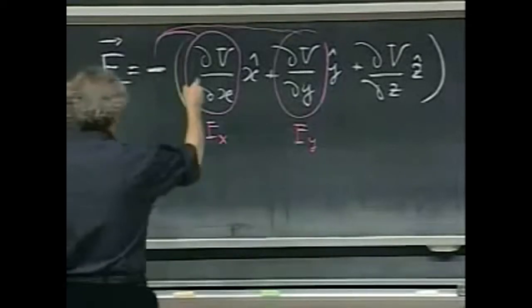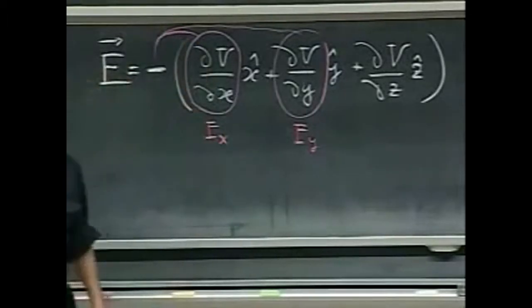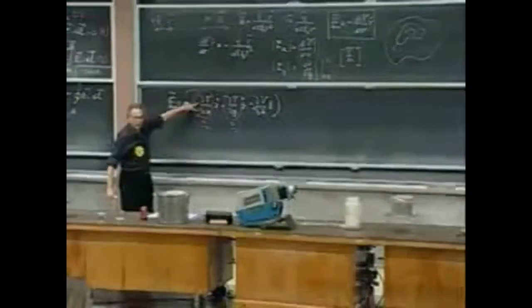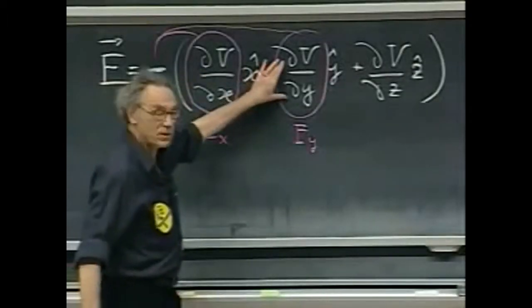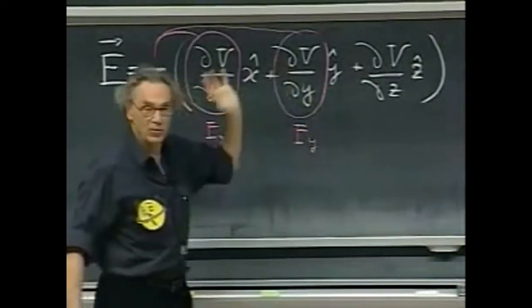And the fact that you see these curled Ds, it means partial derivatives, that means when you do this derivative, you keep z and y constant. When you do this derivative, you keep x and z constant and so on.